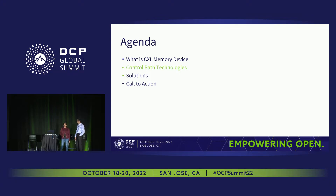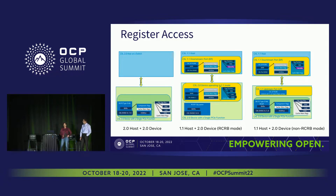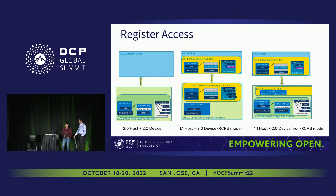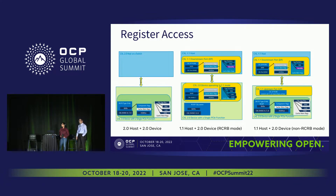Now we talk about control path technologies and solutions. With today's devices and hosts on the market — looking from right to left — a 1.1 host with a 2.0 device: the 1.1 host will come to market within probably half a year, with Intel Sapphire Rapids and AMD Genoa. Some 2.0 devices are already on the market. A 2.0 device can run in either RCRB mode or non-RCRB mode. Today's kernel does not really work with those in terms of device management. We are working with the kernel community to address those issues, and if you go to the Linux CXL mailing list you will see patches and very active discussions happening right now.